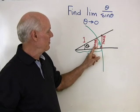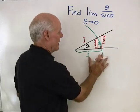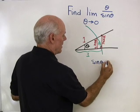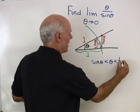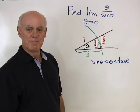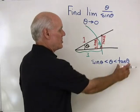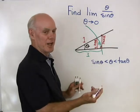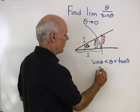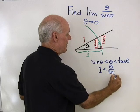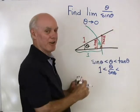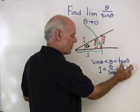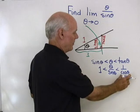Theta is trapped in between sine theta and tangent theta, so we can write the inequality: sine theta is less than theta, which is less than tangent theta. Since tangent theta equals sine theta over cosine theta, dividing all three members by sine theta gives: one is less than theta over sine theta, which is less than one over cosine theta.